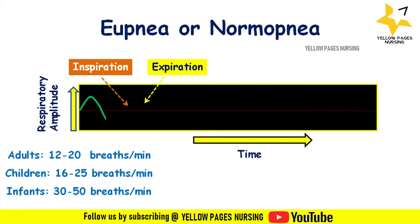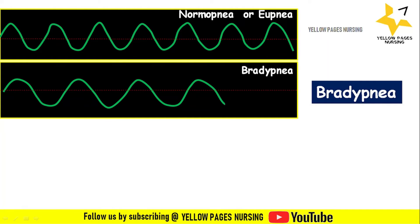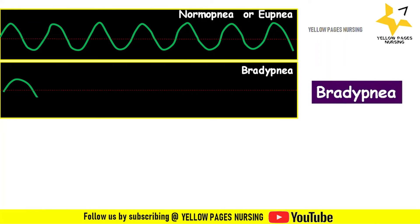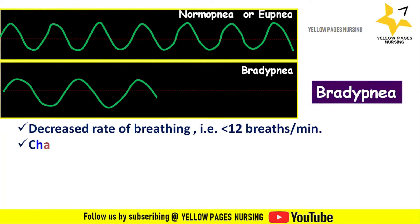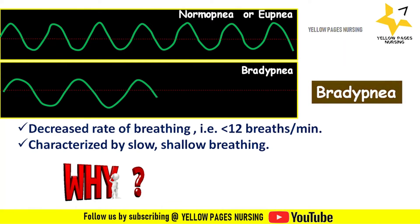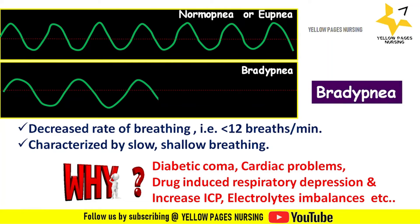Next comes bradypnea. Comparing the graphical images, the first describes normopnea and the second indicates bradypnea, where the curve length is larger compared to normopnea. In bradypnea, the rate of breathing is decreased — less than 12 breaths per minute — and it is characterized by slow, shallow breathing. Causes include diabetic coma, cardiac problems, drug-induced respiratory depression, increased intracranial pressure, and electrolyte imbalances.